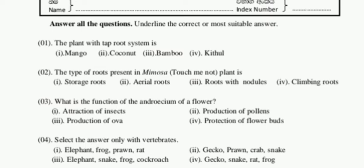Let's move to the next question: select the answer with only vertebrates. In this question we have to select only vertebrate animals. We know there are two types of animals — vertebrates and invertebrates. When selecting the answer, we choose only vertebrate organisms. In option one: elephant — vertebrate, frog — vertebrate, brown — invertebrate, red — vertebrate.